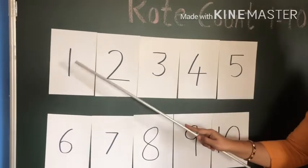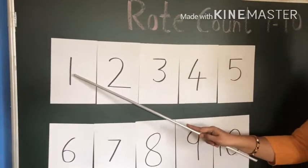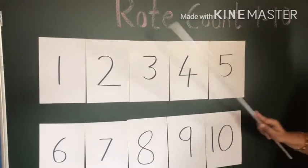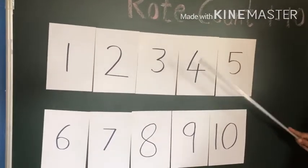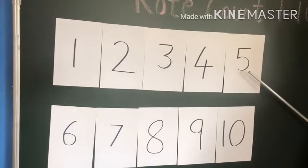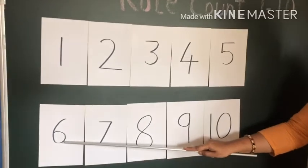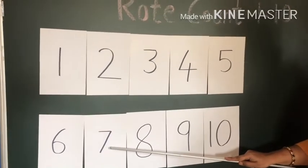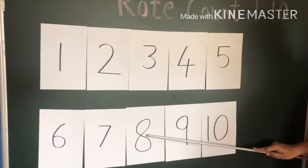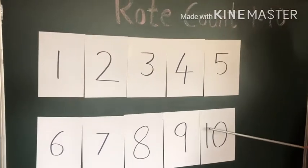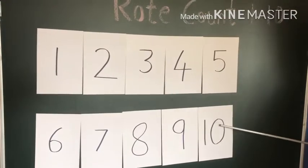Now we will repeat again. This is 1, 2, 3, 4, 5, 6. What comes after 6? 7, 7, 8, 9, and 1, 0, 10.